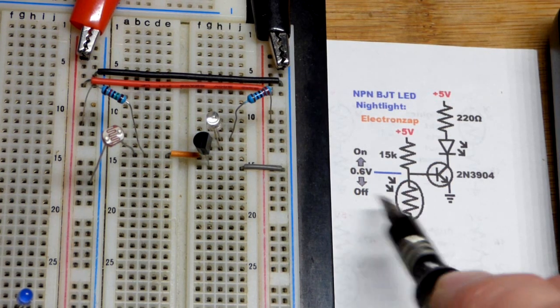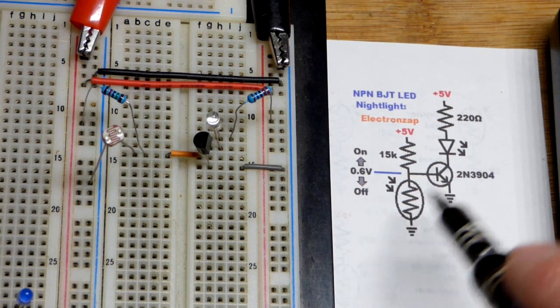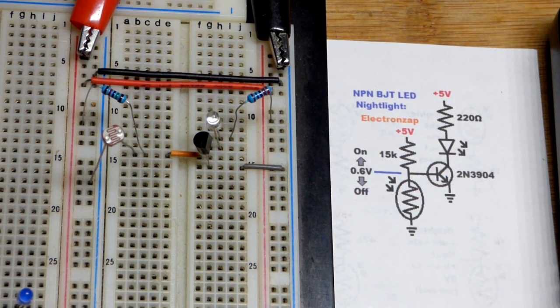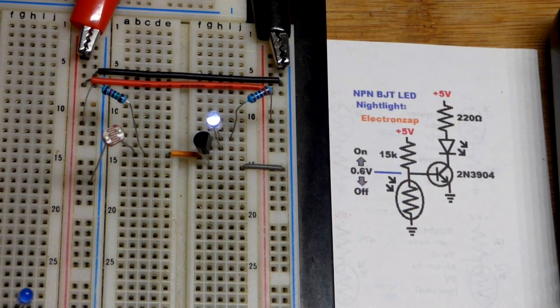So in any case, we have the light dependent resistor. Enough light is falling on it right now that the transistor is off. If we get it darker, I'm going to slowly get it darker, there you can see we have some glow.